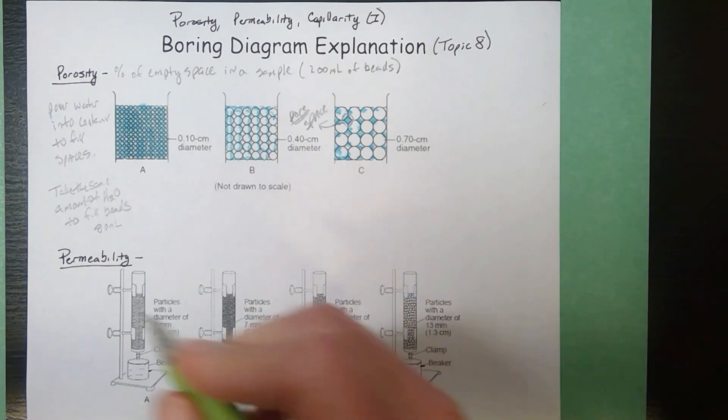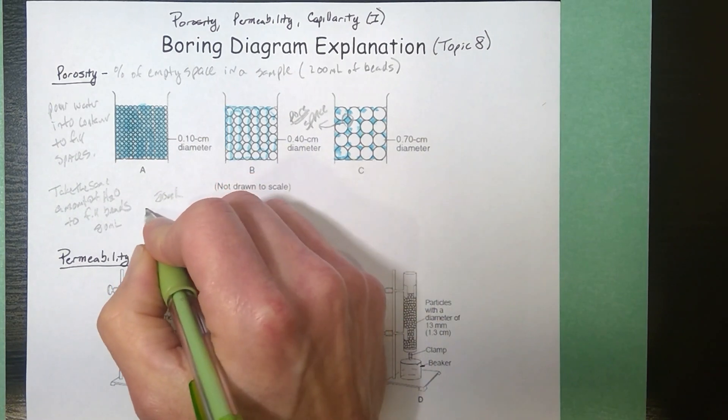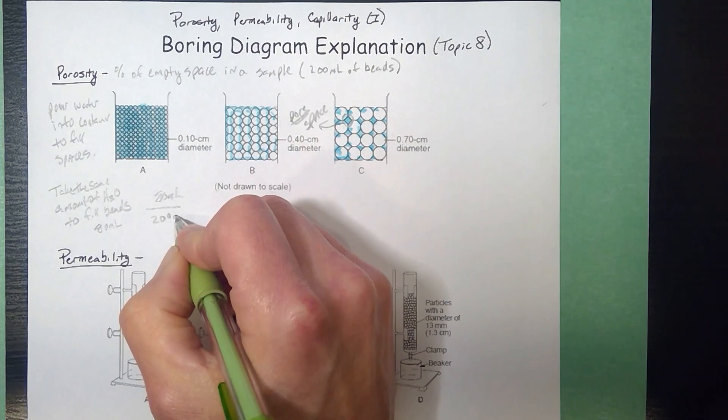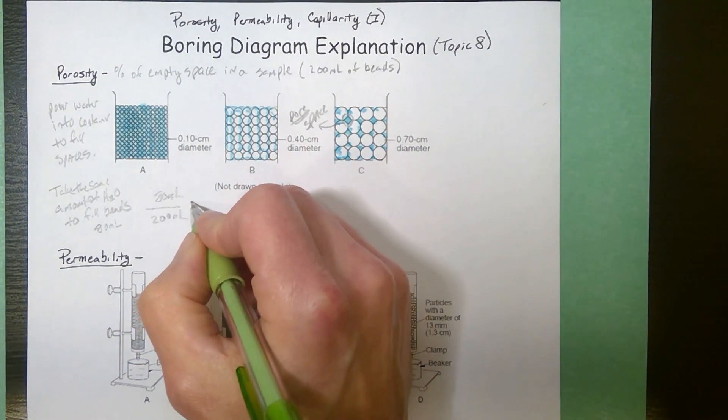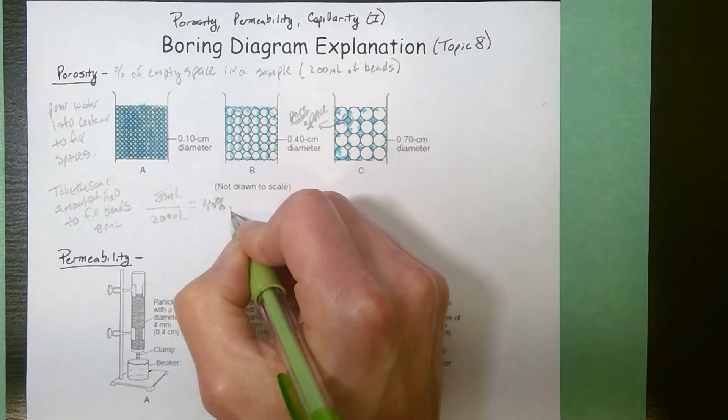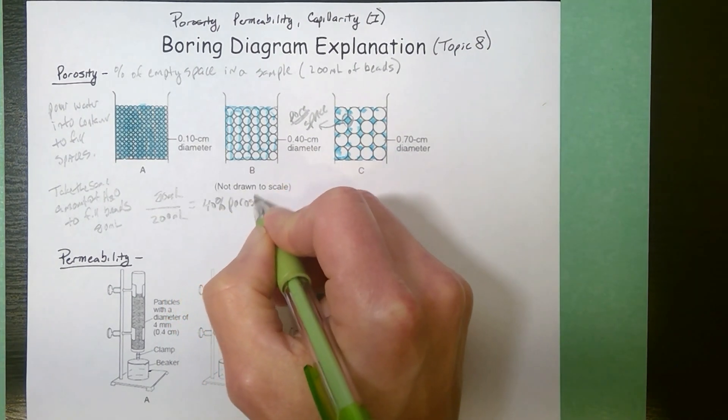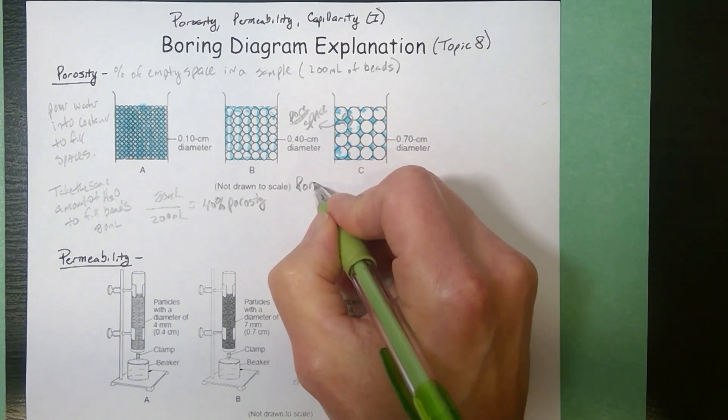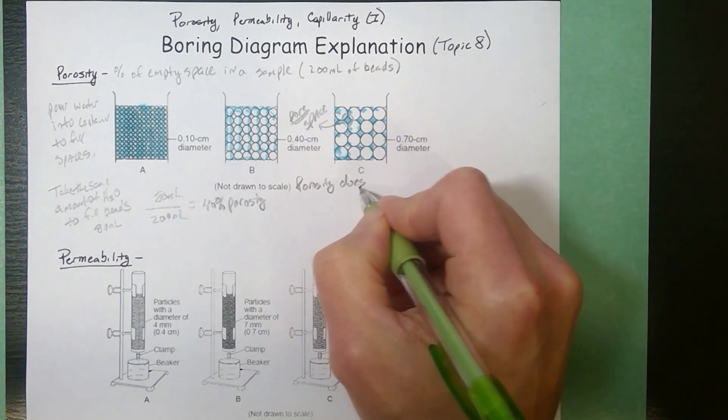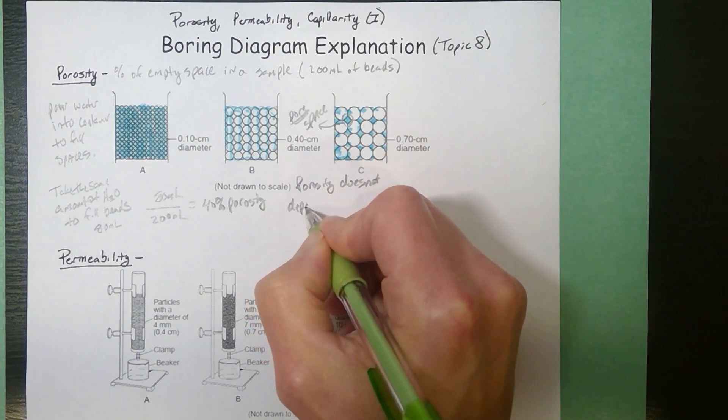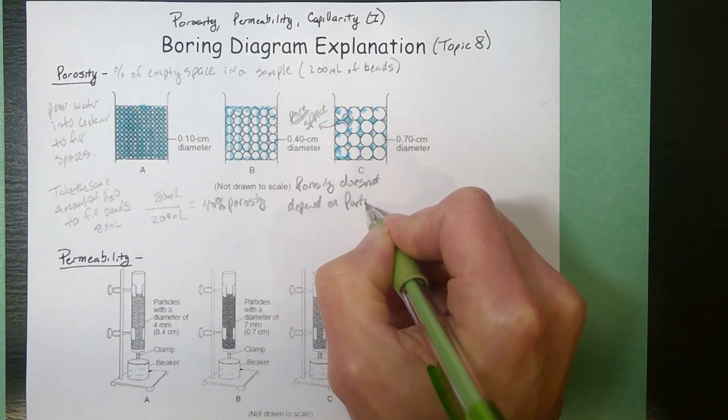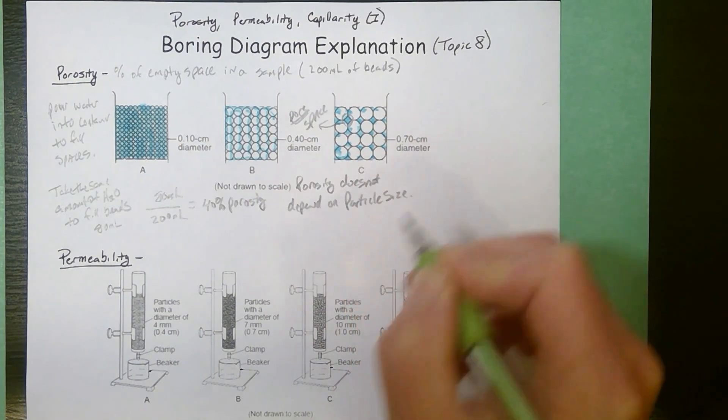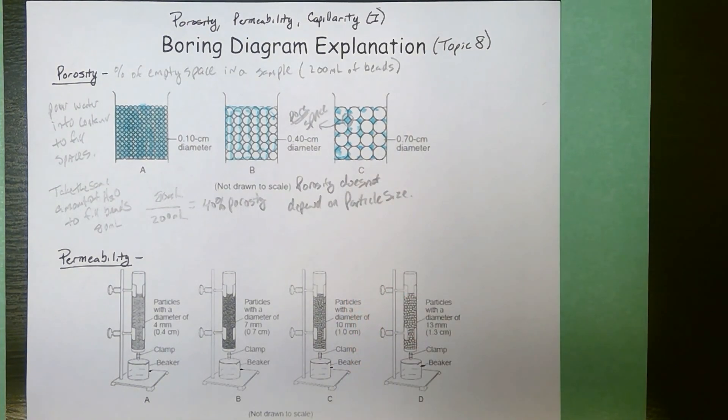If we look at that mathematically, there's 80 milliliters of water filling in between the 200 milliliters of beads. So that's giving you 40% porosity. So even though they're different sizes, because they're the same shape and they're packed the same way, they wind up having identical porosities. So one thing that you should know is that porosity does not depend on particle size. Since these are round sorted particles, they're all the exact same porosity.